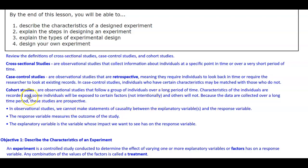And then there's cohort studies. They are observational studies that follow a group of individuals over a long period of time. Characteristics of the individuals are recorded, and some individuals will be exposed to certain factors — not intentionally — and others will not. Because the data are collected over a long time period, these studies are prospective.